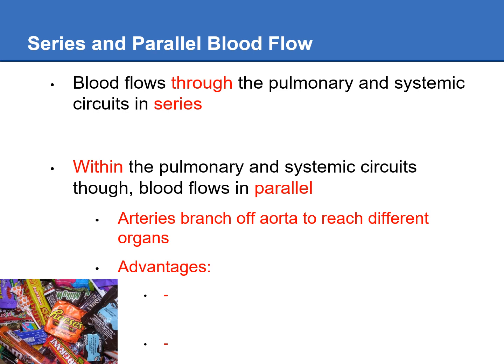The two advantages of blood flowing in parallel through the systemic circuit: first, it makes sure that all of the organs get enough oxygen; second, it allows the body to regulate blood flow to different organs — you can increase or decrease blood flow to an organ depending on its activity.